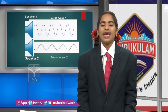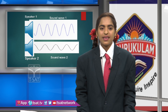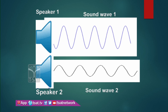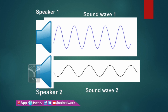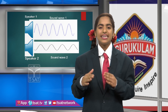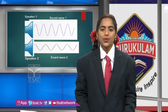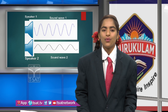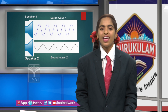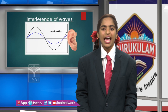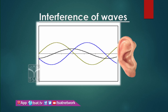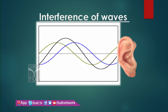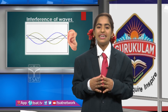We will see the waves travelling in the air. This is sound wave 1, coming from speaker 1, travelling in the air in many directions. Another sound wave 2 produces from speaker 2 and travels in the air. Sound wave 1 and sound wave 2 travelling in the air interfere with each other and produce alternately constructive interference and destructive interference.